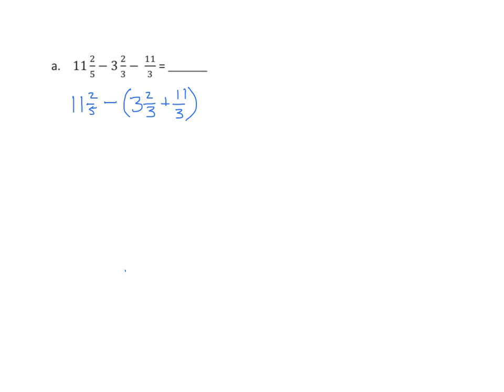Now we'll solve the expression in the parentheses. We have 3 and 2 thirds, and 11 thirds would be 3 and 2 thirds once again. We'll find the sum: 11 and 2 fifths minus, 6 plus 2 thirds plus 2 thirds. That should be a subtraction sign there. 11 and 2 fifths minus 6 and 4 thirds, which equals 11 and 2 fifths minus 7 and 1 third.